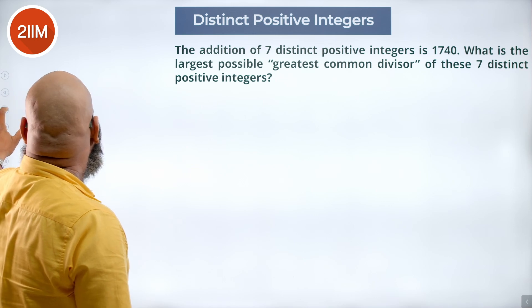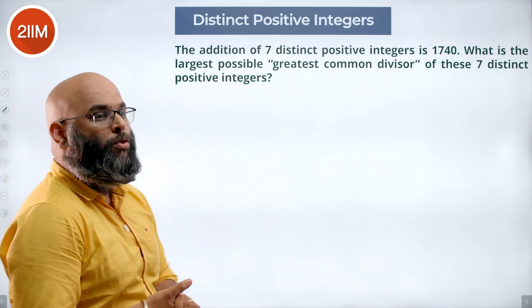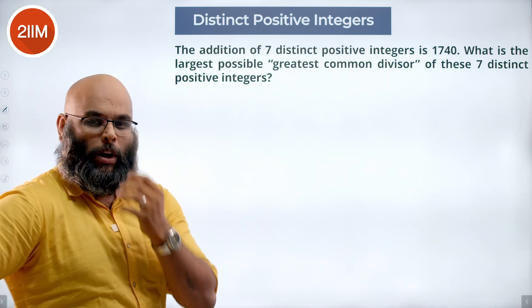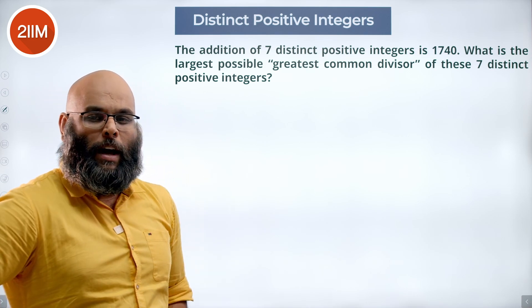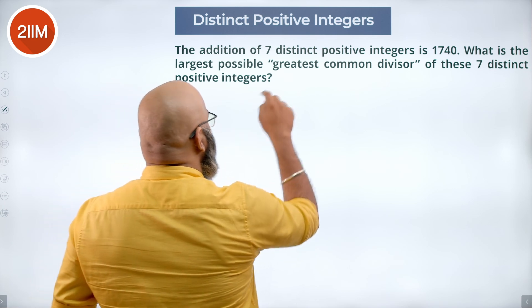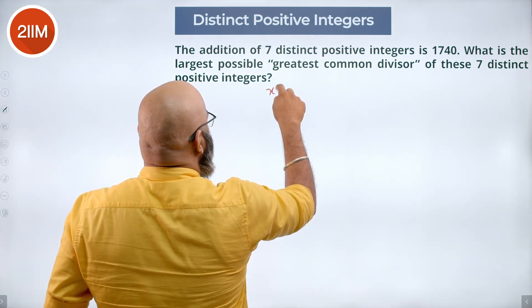So we have 7 distinct numbers and we are supposed to find the GCD or HCF of these numbers. Since all 7 of them have an HCF, let us call the 7 numbers as X into A,